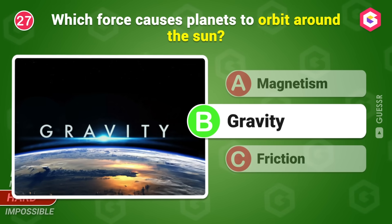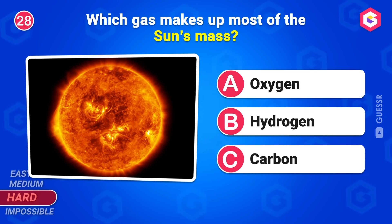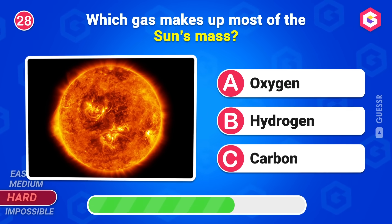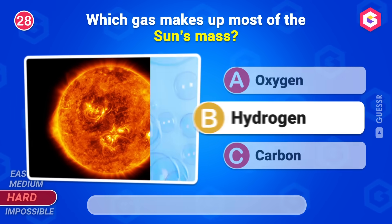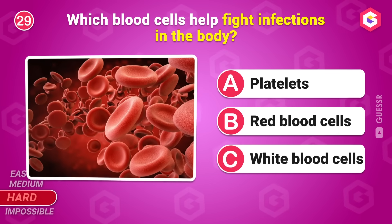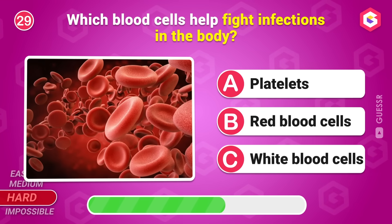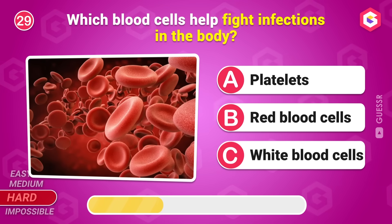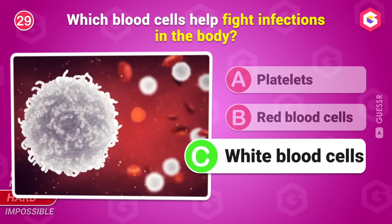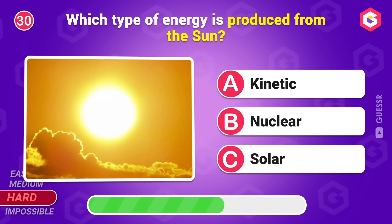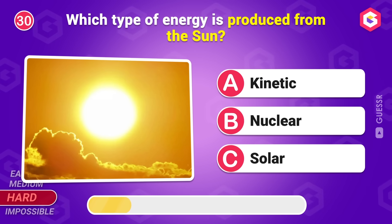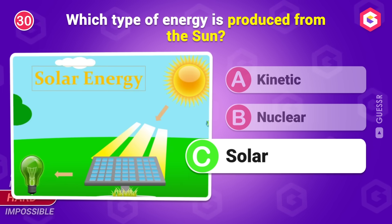Gravity. Which gas makes up most of the sun's mass? Hydrogen. Which blood cells help fight infections in the body? White blood cells. Which type of energy is produced from the sun? Solar energy.